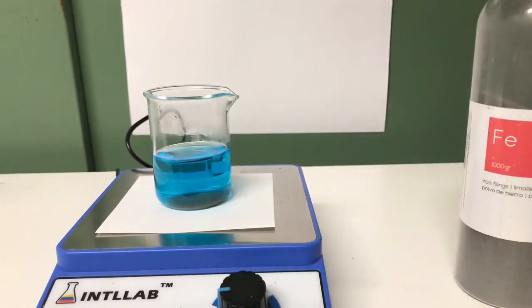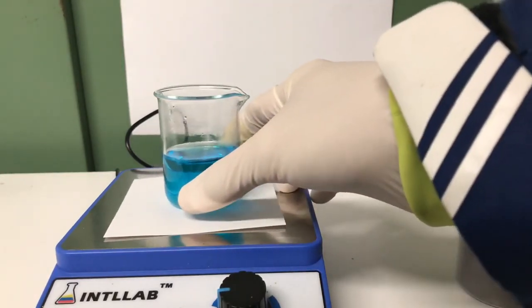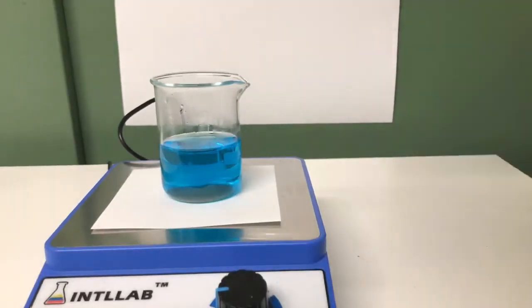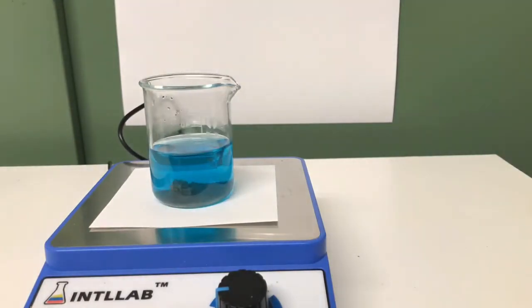You are now able to see that our solution is even stirred when we remove the stir bar because the iron fillings are getting moved by our rotating magnet in the stirring plate as well.